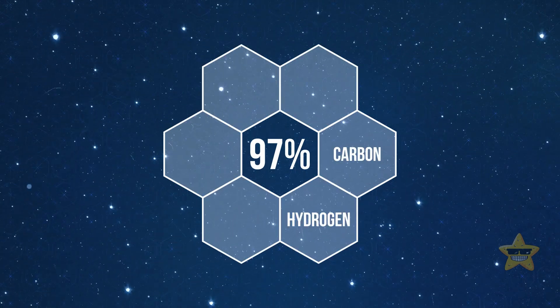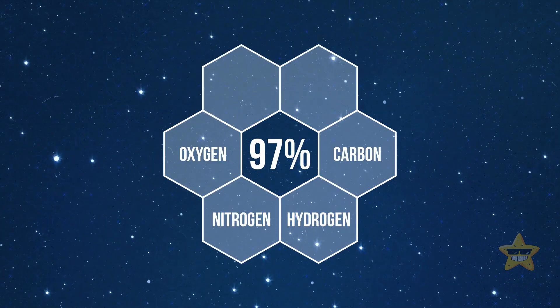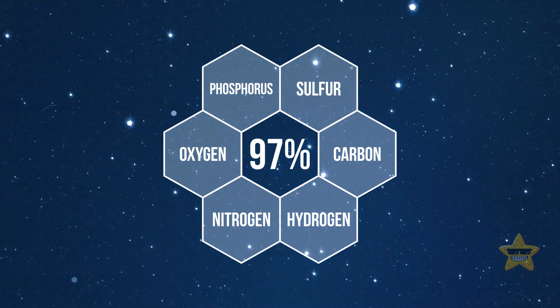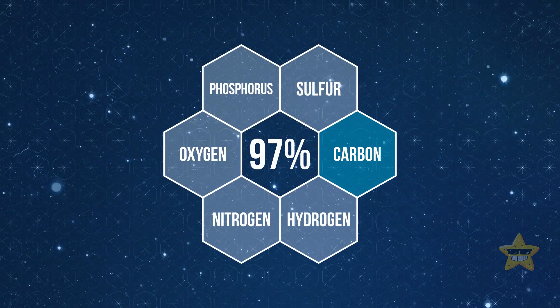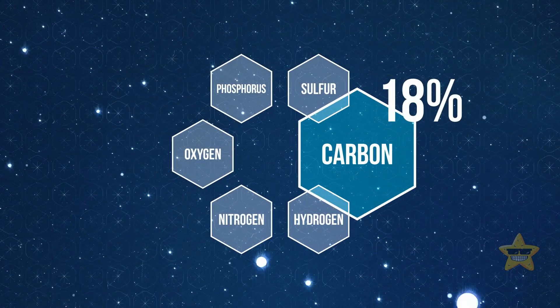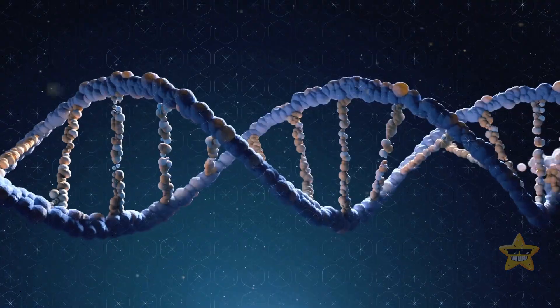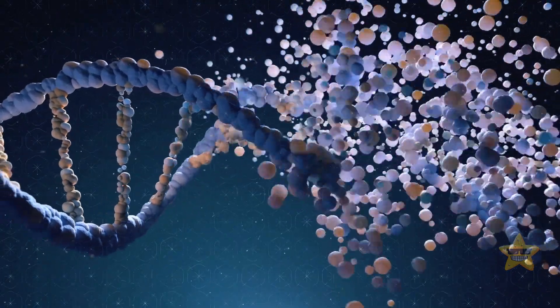97% of our human bodies are made up of six elements: carbon, hydrogen, nitrogen, oxygen, phosphorus, and sulfur. Carbon is the glue that holds everything together and gives our structures strength. It makes up 18% of your body, so without it there'd be no DNA or any of the cool stuff that makes you, well, you.